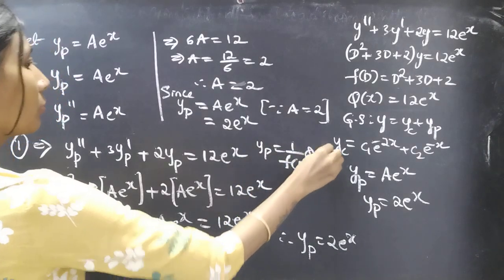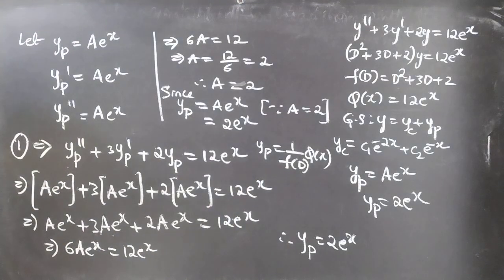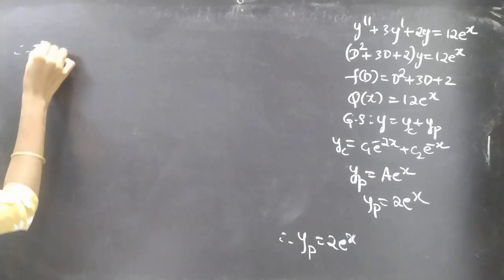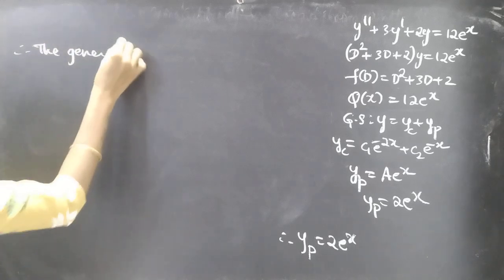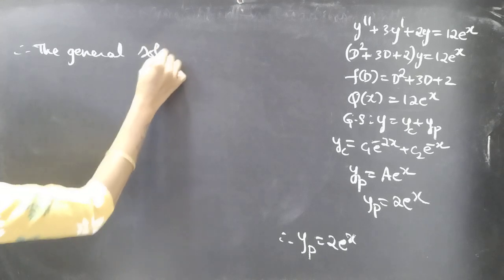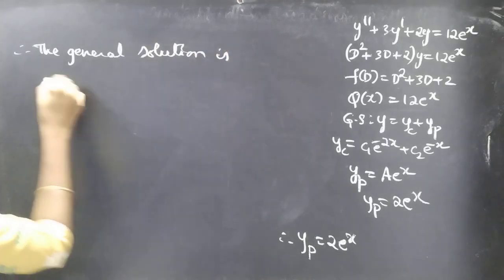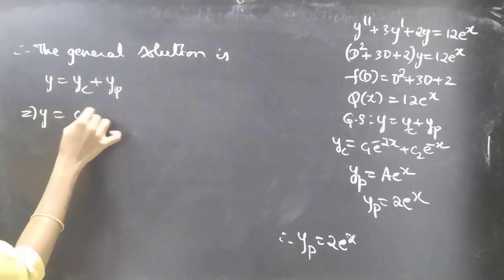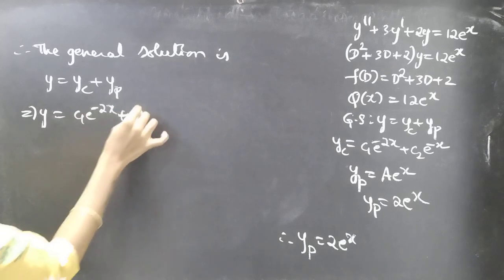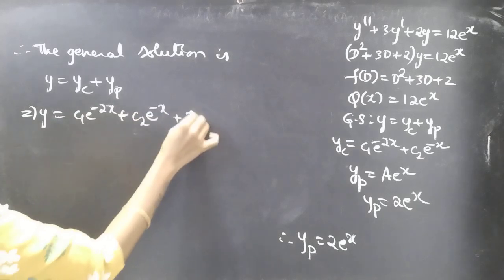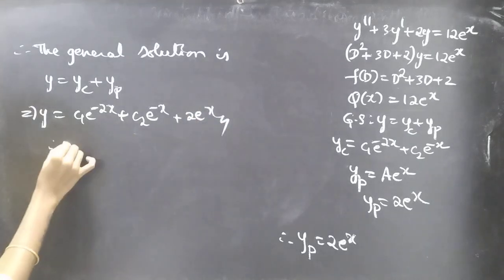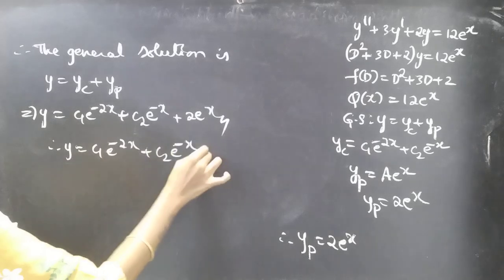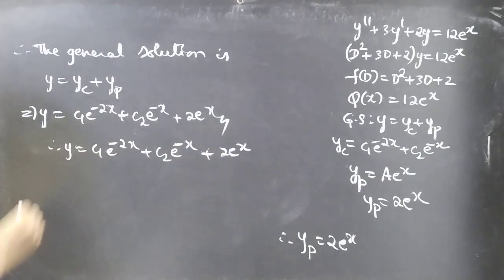You can also verify the answer using yp = (1/f(D))·Q(x). We have found yc and yp, so the general solution is y = yc + yp. Therefore y = c₁e^(−2x) + c₂e^(−x) + 2e^x, which is the required solution.